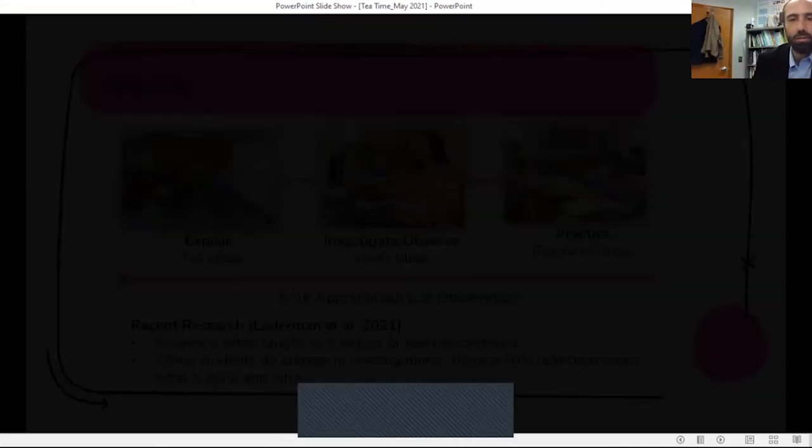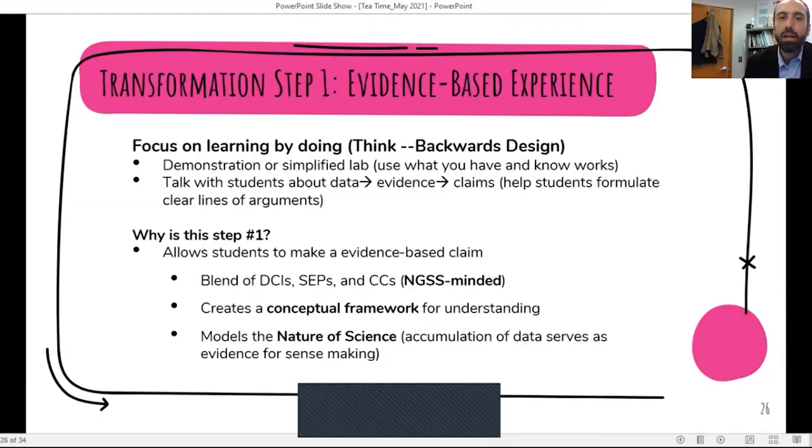So the first step in the process is really pinpointing the evidence-based experience you're going to use with kids. So it's either identifying a demonstration, a simple lab that you're doing, and really making that the centerpiece of that lesson. So thinking through what evidence-based experiences kids could have. So in addition to identifying that hands-on experience that you already probably have in your curriculum, we're going to think a little bit differently about how we talk with students. So during that phase, we're going to really focus on helping kids go from data to evidence to claims. So the first step in the process is it's really identifying something that you're already doing that's hands-on and then thinking about how you're going to talk with students a little bit differently so that they're the ones constructing the knowledge based on those firsthand experiences.